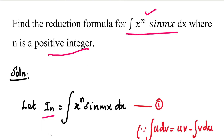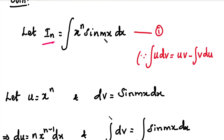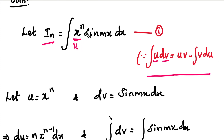We will assume this integral is I of n. We will use the integration by parts formula first to simplify. The formula states: integral of u dv equals uv minus integral of v du. We set u equal to x power n and dv equal to sin mx dx.